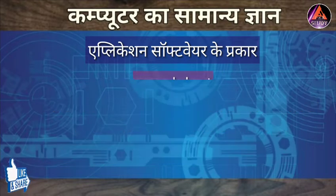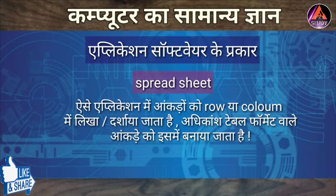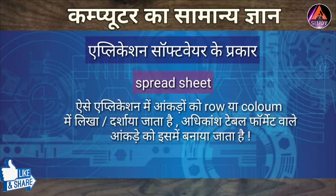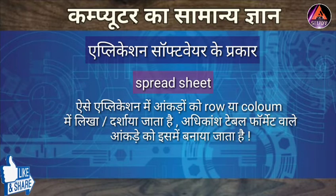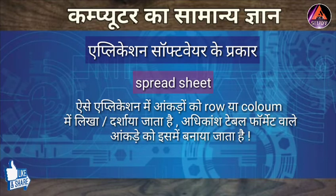तीसरे प्रकार के Application Software में Spreadsheet जैसे applications आते हैं। ये software rows और columns में बने होते हैं। इसमें ऐसी चीजें लिखी जाती हैं जिनमें संख्यात्मक उपयोग करना हो — आंकड़े लिखने हों, visualization करना हो, जोड़-घटाना, हिसाब-किताब वाला काम करना हो। ऐसी चीजों के लिए Spreadsheet Software Application का उपयोग करते हैं।